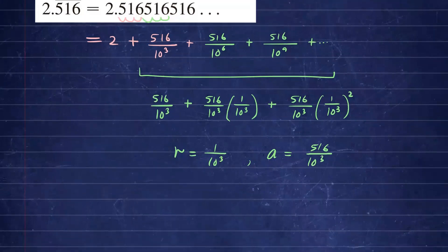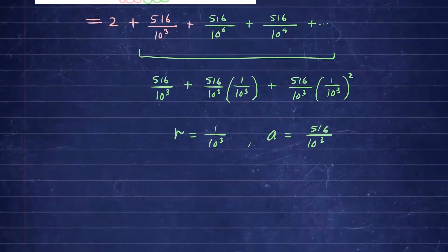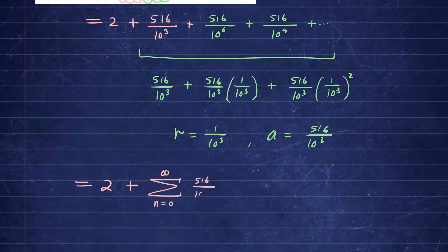So now if you were to write this into that summation form, you will have 2 from before, plus now that repeated decimal we're expressing as a geometric series. The sum starting from n equals 0 to infinity of A, which is 516 over 10 to the 3rd power, times the common ratio, which is 1 over 10 to the 3rd to the power of n.